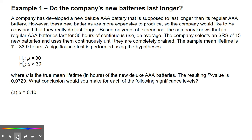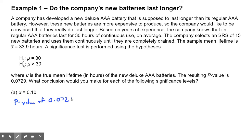A significance test is performed using the null hypothesis that the average is equal to 30 hours versus the alternative that the average might be greater than 30 hours, where mu is the true mean lifetime in hours of the new deluxe AAA batteries. The resulting p-value is 0.0729. What conclusion would you make for each of the following significance levels? Our first level is alpha equals 0.10. We're going to compare the p-value to the alpha value: p-value of 0.0729 is less than 0.10.